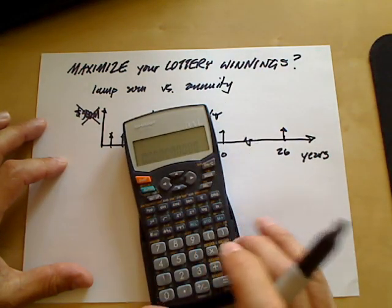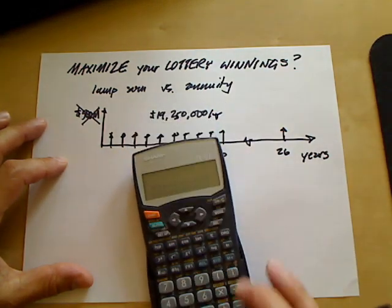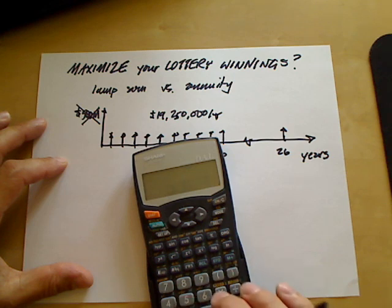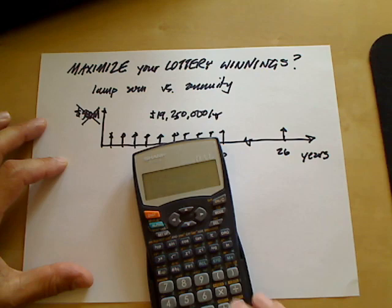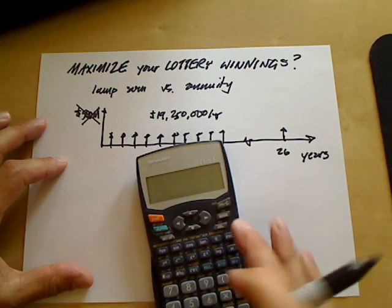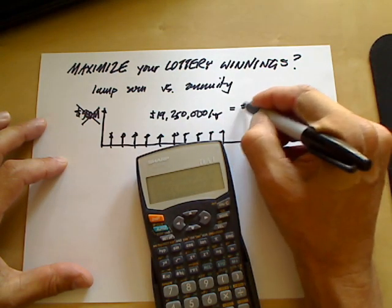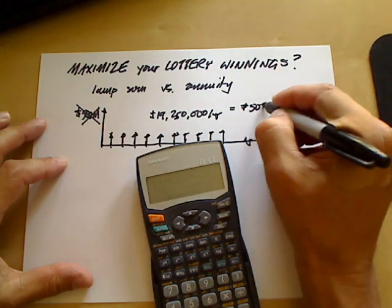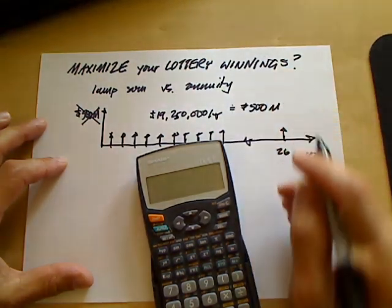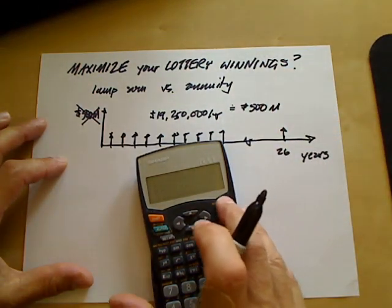Let's check the lottery commission's math: $19,250,000 times 26 equals $500 million and change. It's approximately equal.